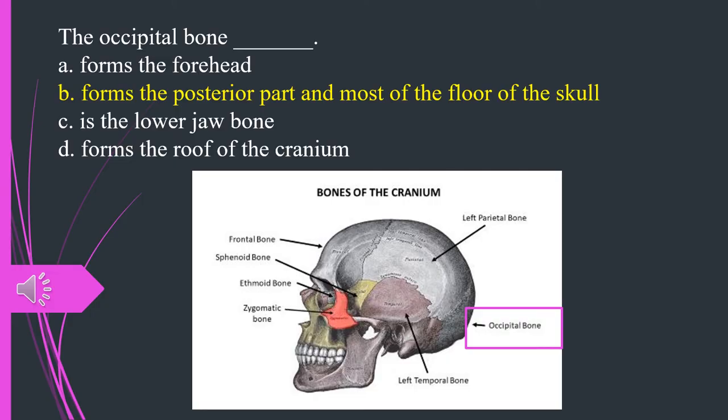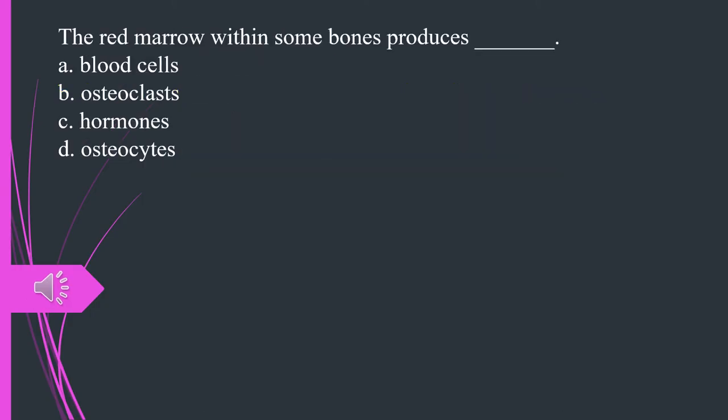The red marrow within some bones produces A. Blood cells. B. Osteoclasts. C. Hormones. D. Osteocytes. The answer is A. Blood cells.